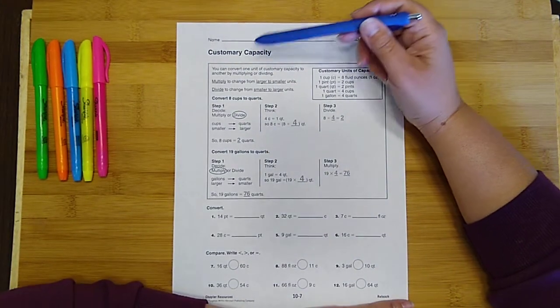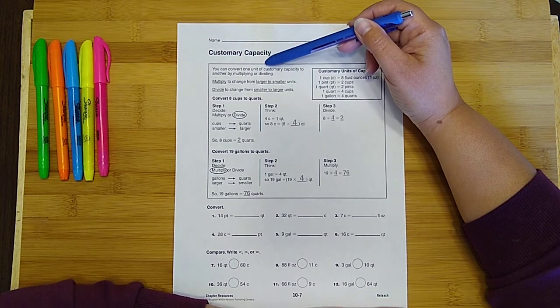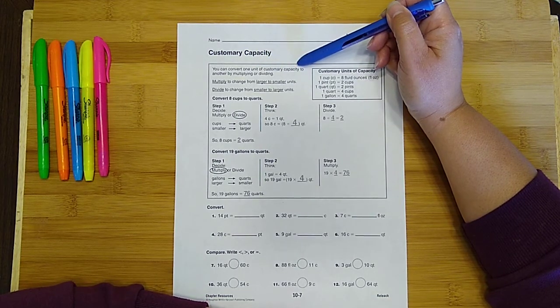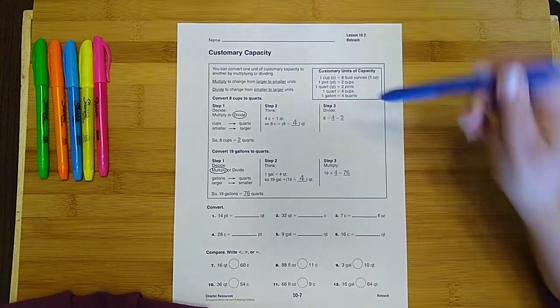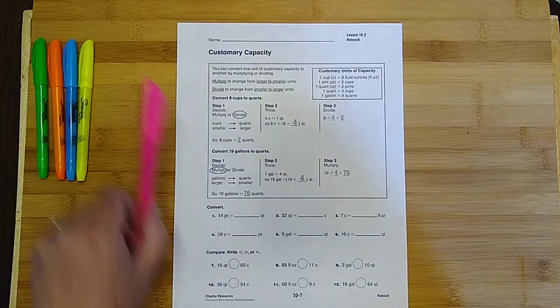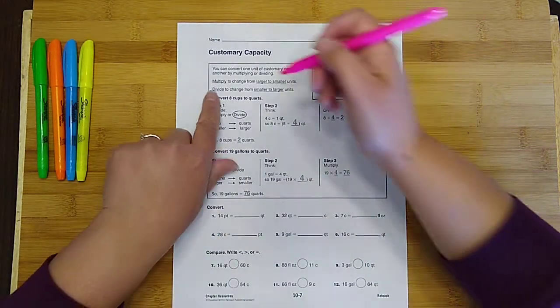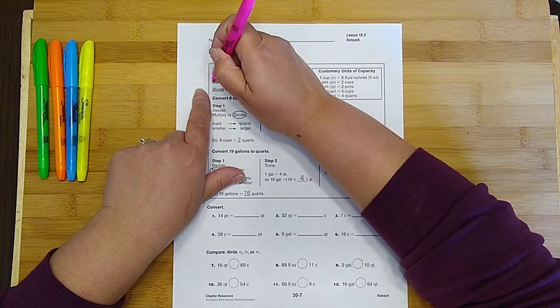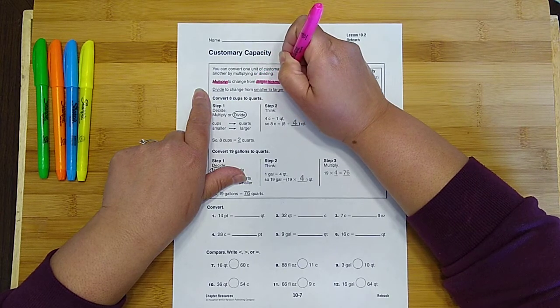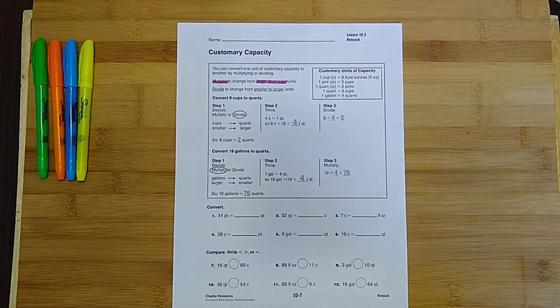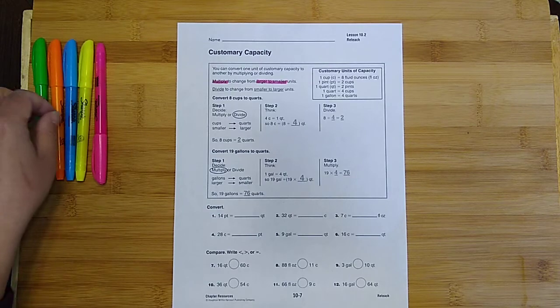Okay, it says you can convert one unit of customary capacity to another by multiplying or dividing. So change from larger to smaller units.